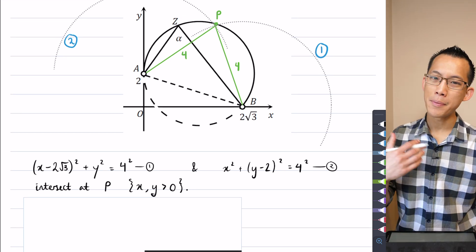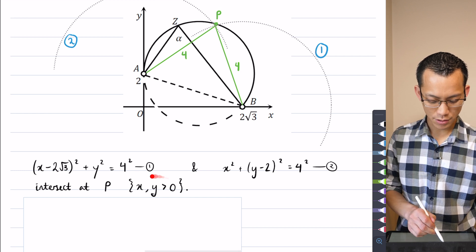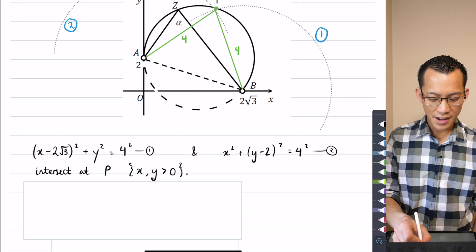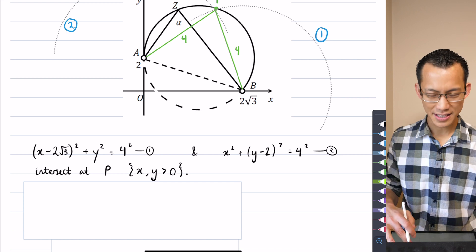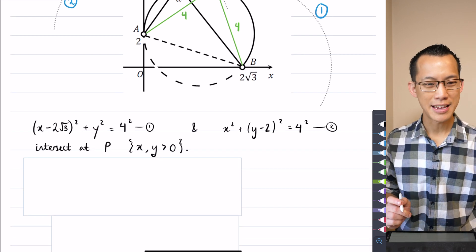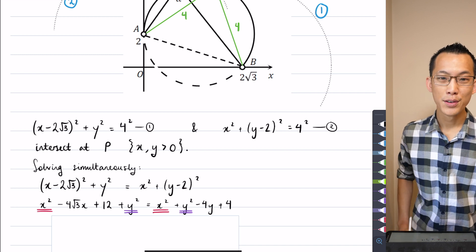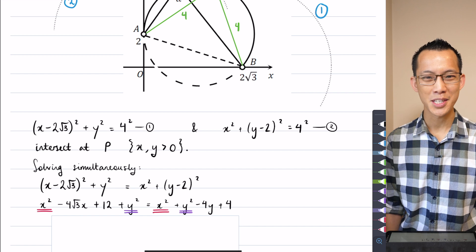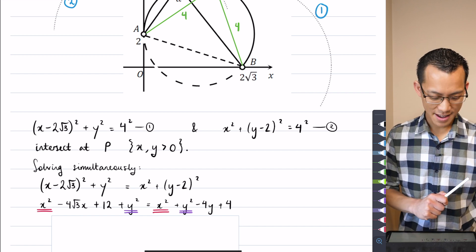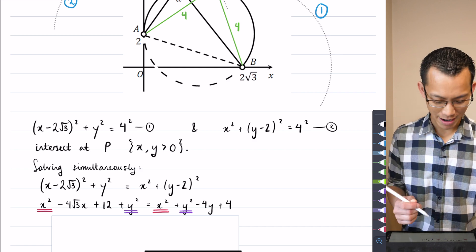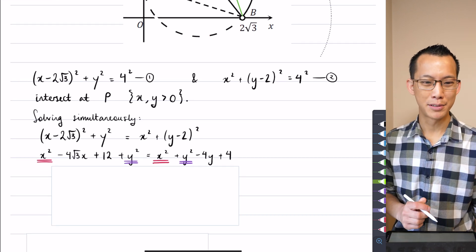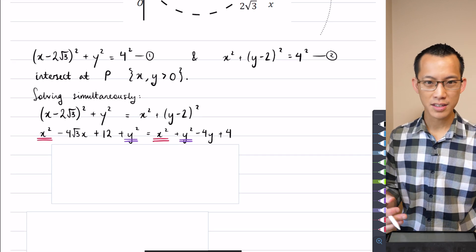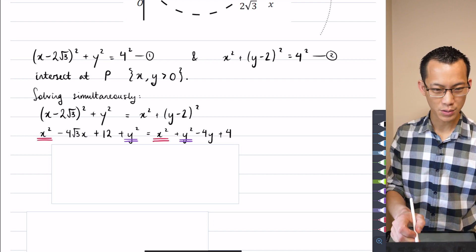I'm going to say they intersect at P, and I'm up here in the first quadrant, so I'll restrict x and y to both being positive. Now from here, I'm trying to find where that point P is, so all I need to do is solve simultaneously. I know it looks like it's going to be a mess because you've got all this stuff to expand, but because your circles are so alike, you're going to get x² and y² terms cancelling — you can see them highlighted in red and purple below.